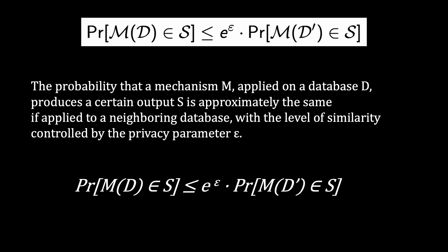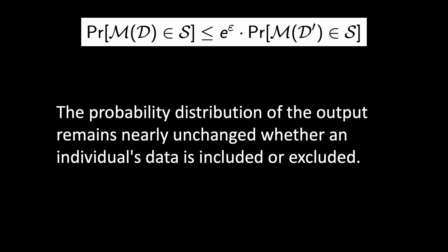So another way to understand differential privacy is that the probability distribution of the output remains nearly unchanged whether an individual's data is included or excluded.